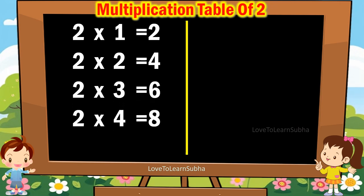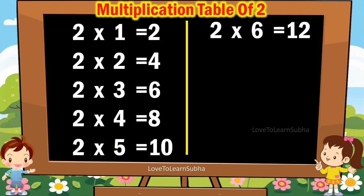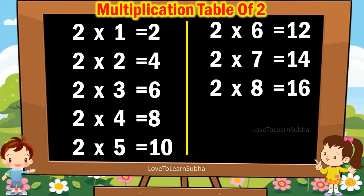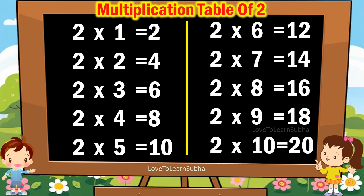2 4s are 8, 2 5s are 10, 2 6s are 12, 2 7s are 14, 2 8s are 16, 2 9s are 18, 2 10s are 20.